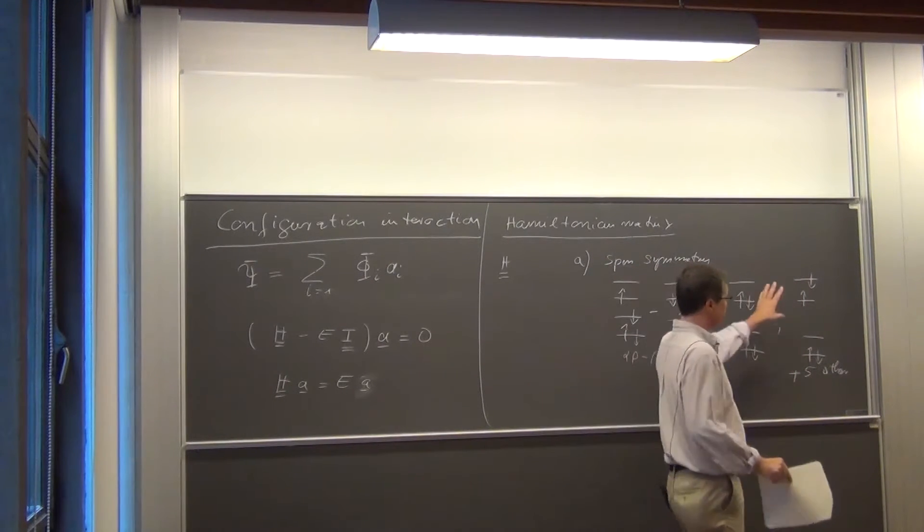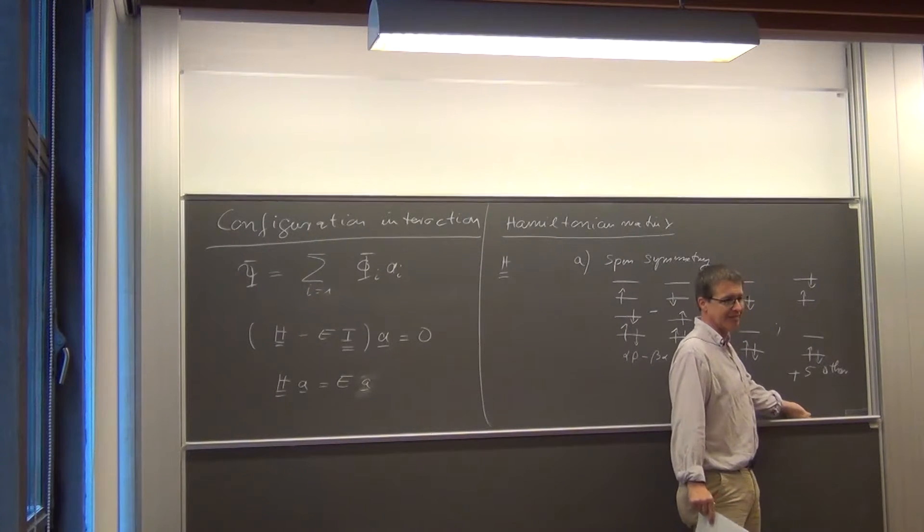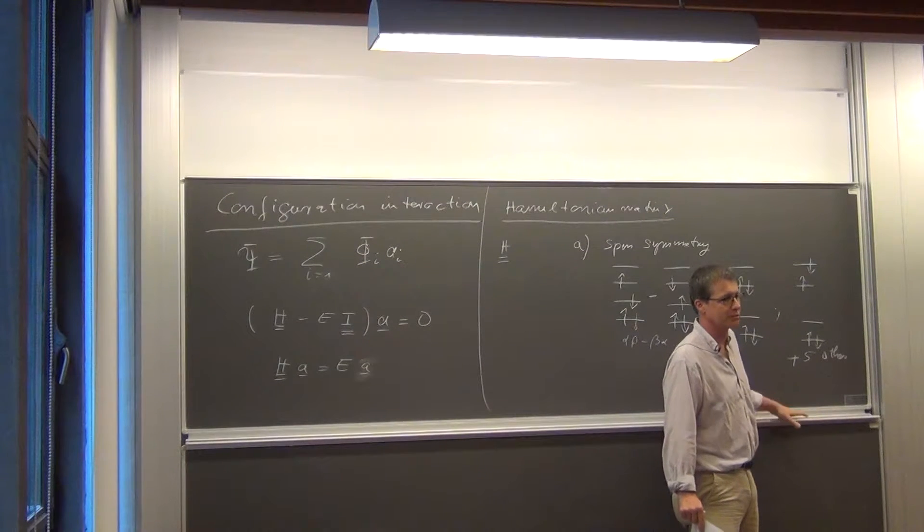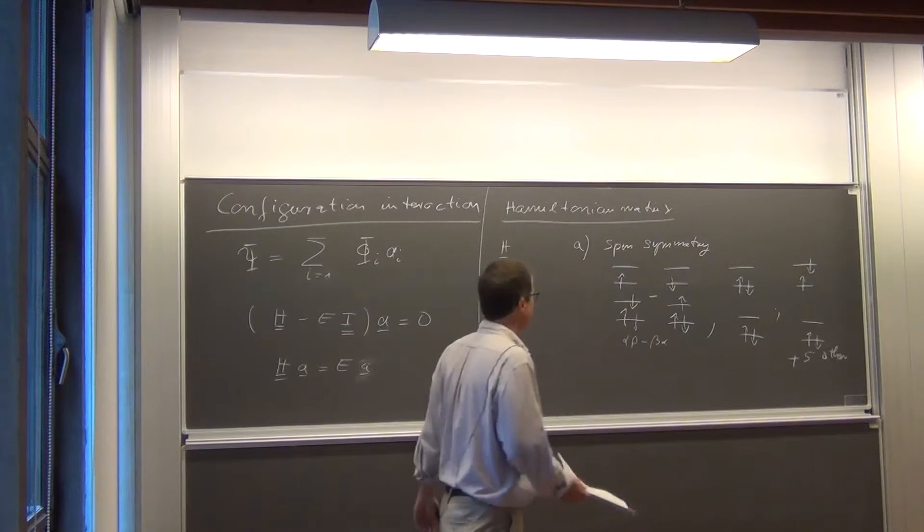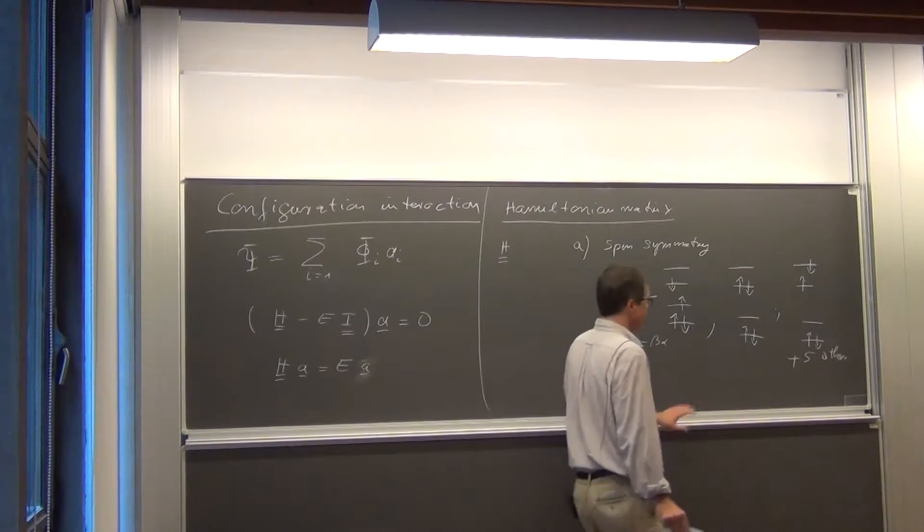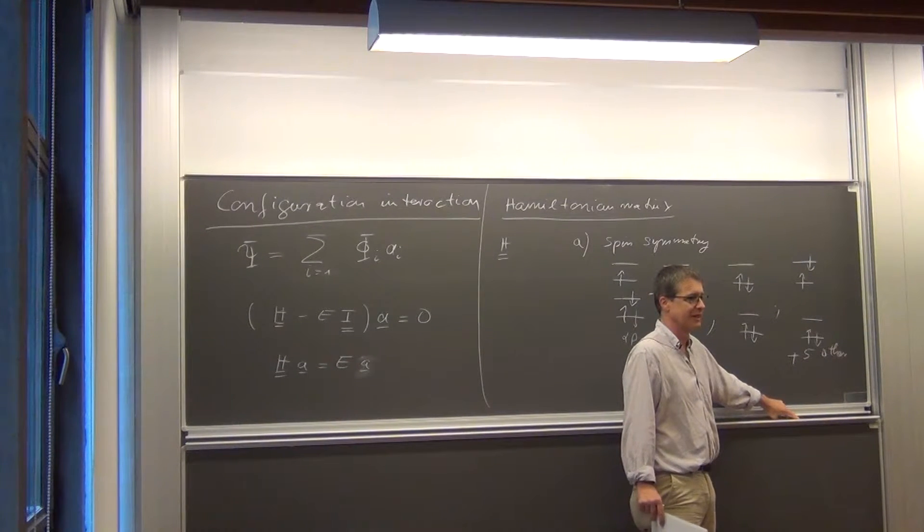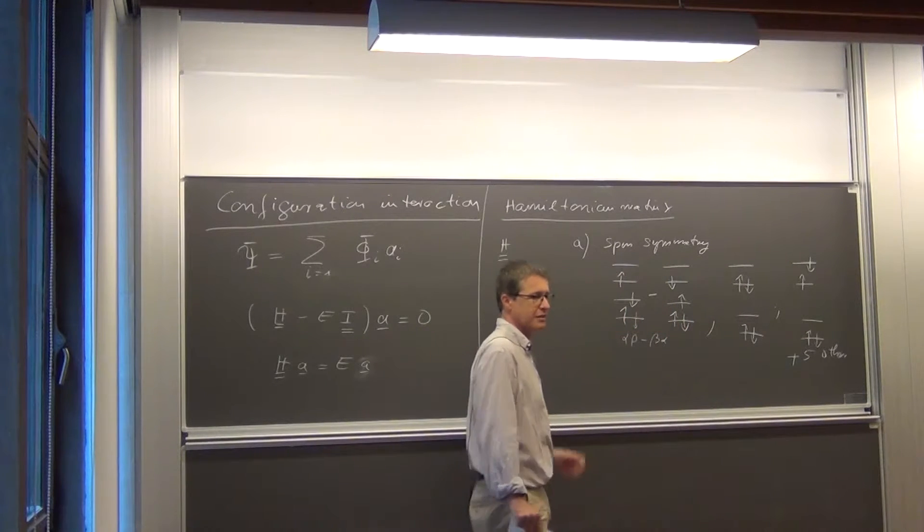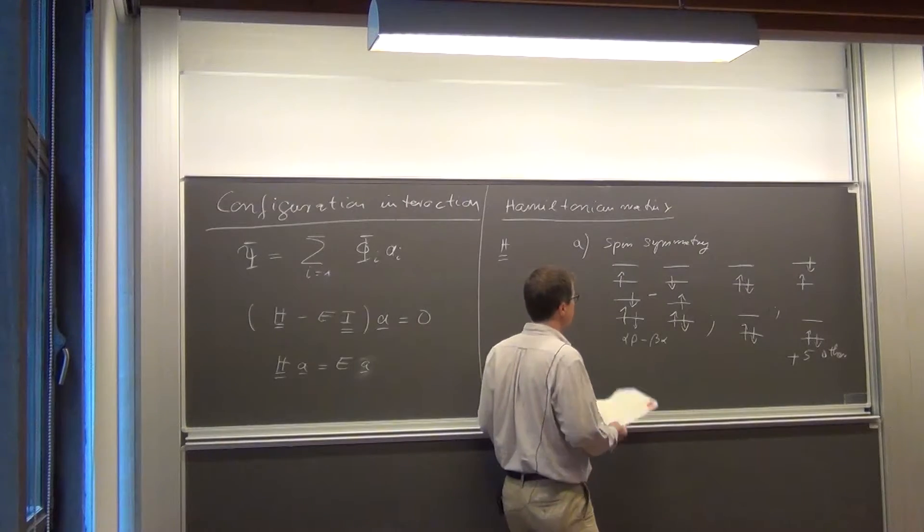So we actually have, there are five other possibilities how you can combine them. The higher the excitation level, the more possibilities there are to do that. But it has to be done. Because otherwise you're going to try to calculate matrix elements, which are going to be zero anyway. So spin symmetry is one.